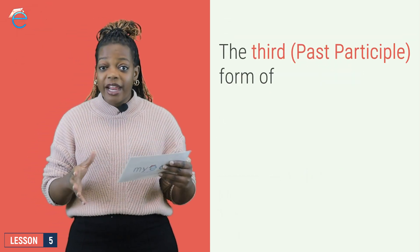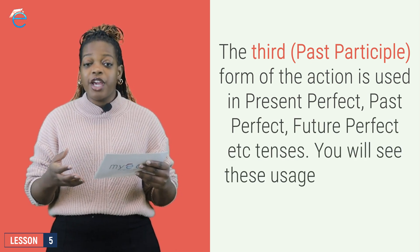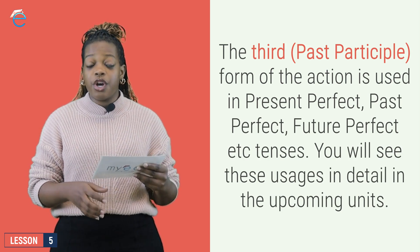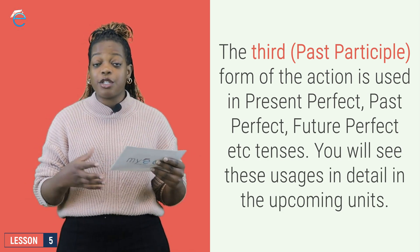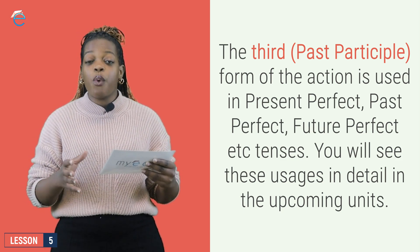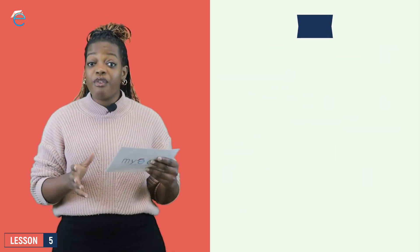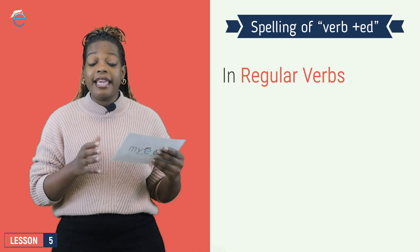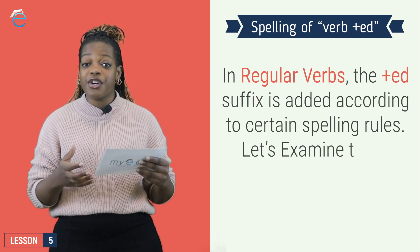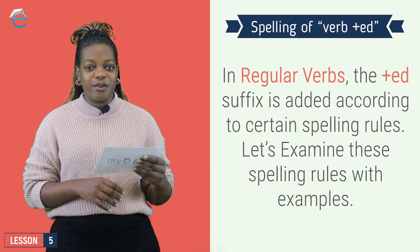The form 3 or the verb 3 past participle is used in our perfect tenses. So, future perfect tense, past perfect tense, and tenses like this, which we will see in upcoming lessons. With regular verbs, the ED ending is added according to certain rules that we follow. Let's have a look at those rules.